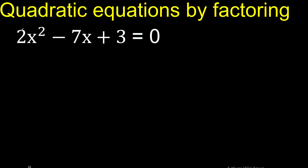2 numbers that multiply is 2 — 2 multiplied by 1 is 2. x multiplied by x is x squared. 2 numbers that multiply to give 3: 3 multiplied by 1, or 1 multiplied by 3.